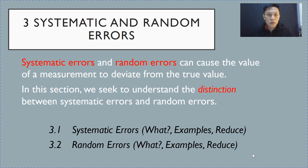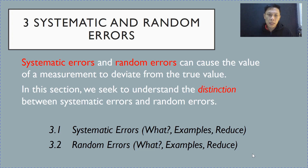So, in 3.1 and 3.2, we will each look at the type of error, what are the characteristics of this type of error, what are the examples, and finally, how to reduce these errors.